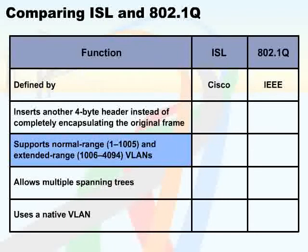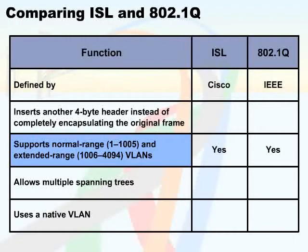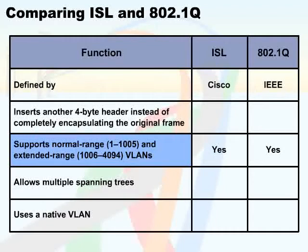Let's first look at the similarities between the two. Both protocols support the same number of VLANs — 4,094 VLANs. Both use a 12-bit VLAN header to define VLANs. This means that both of them can support 2 to the power of 12, or 4,096 VLAN IDs, of which VLAN ID 0 and 4,095 are reserved values and cannot be used, leaving us with a total of 4,094.